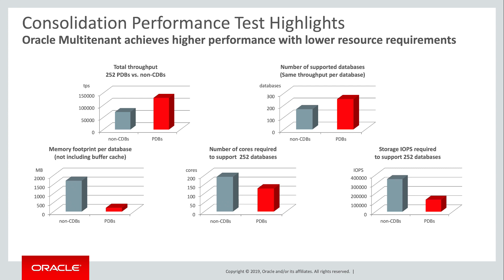In each case, the grey bars show stacking multiple single-instance databases. The red bars show consolidation with multitenant. Test 1 compared maximum throughput with 252 databases consolidated in each case. With multitenant, we achieved 80% higher throughput. Isn't it interesting that the multitenant architecture, designed for consolidation, also enables significant performance improvements?